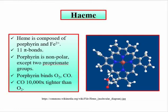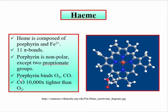Porphyrin can bind O2 and CO. Carbon monoxide binds about 10,000 times more tightly than O2 to the heme part, meaning CO has a much greater affinity for the iron center of the heme group compared to oxygen.